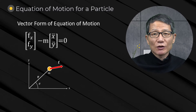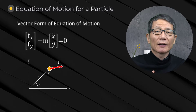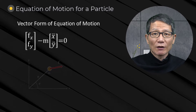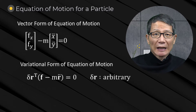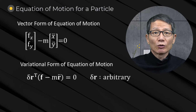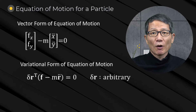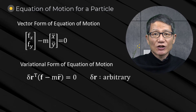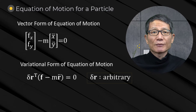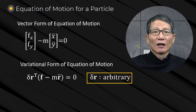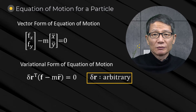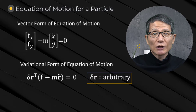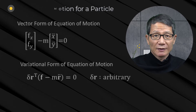The same equations of motion can be expressed in the variational form as follows. It is important to know that in the variational form we need the additional arbitrariness condition of delta q. With this condition, the two equations of motion become equivalent.